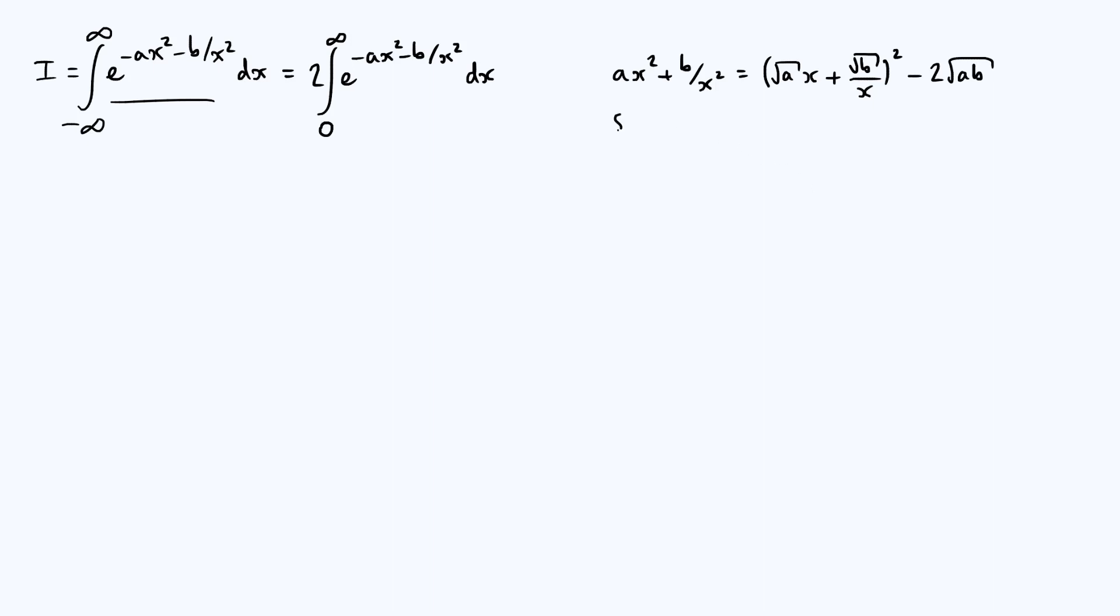So that suggests that we can make a change of variable from x to u, let's call it u, where u is the bracketed term which is root a x plus root b over x. Because then the exponent is just going to involve a minus u squared term, which is just a standard Gaussian integral. So now we've got to think a little bit more carefully about that issue with pluses and minuses that I mentioned earlier.